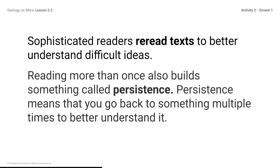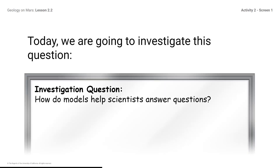Today, we will do a second read. We will return to the article we have already read with an important purpose for re-reading. Today, we are going to investigate this question: How do models help scientists answer questions? You will return to a part of the article to find out how Gurria's model helped him answer a question about Venus.